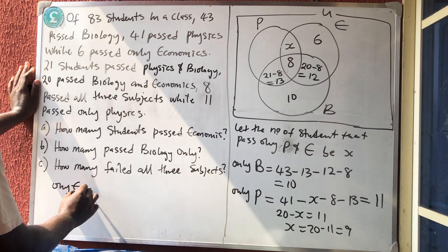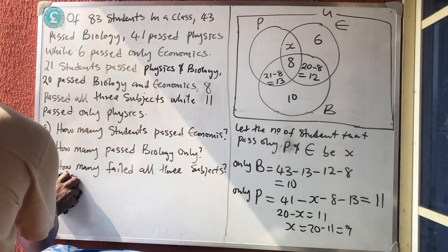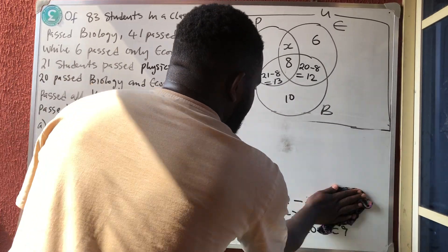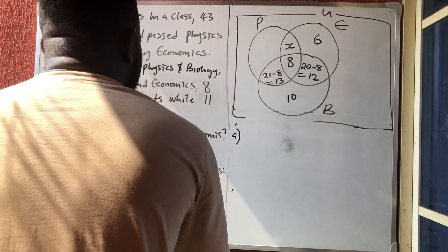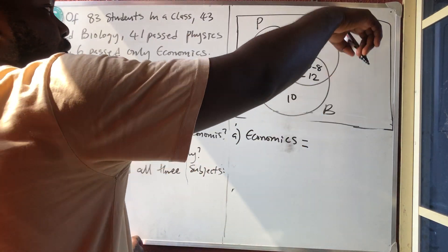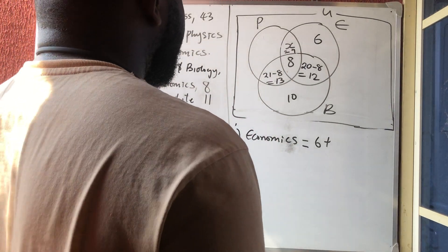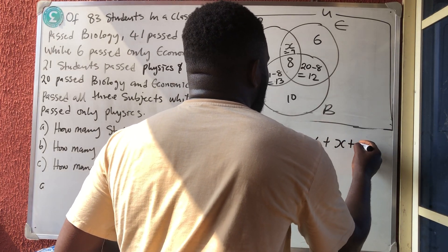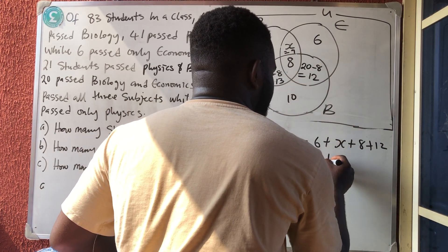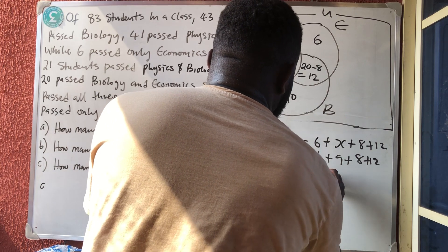For question (a), how many passed Economics? The question says Economics without 'only', meaning we include everything in the Economics circle: 6 (only Economics) plus 9 (Physics and Economics) plus 8 (all three) plus 12 (Biology and Economics). That gives us 6 plus 9 plus 8 plus 12 equals 35 students passed Economics.